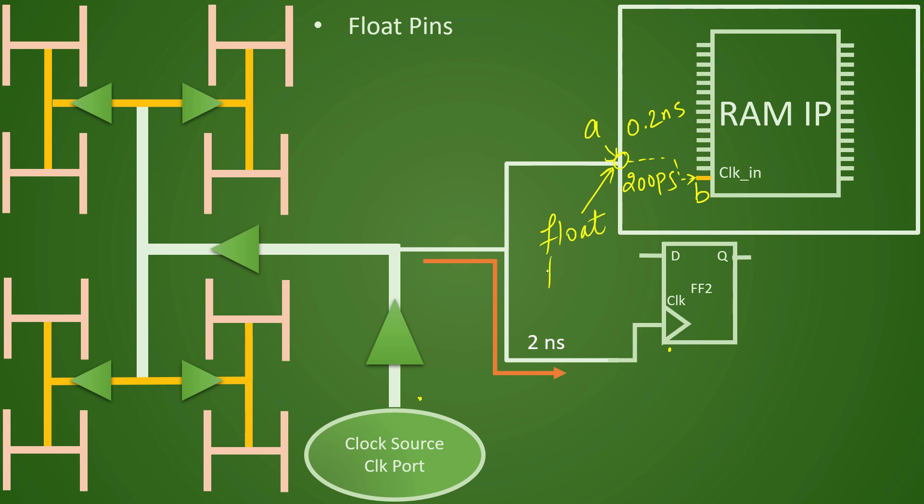And this float pin will be taken such that when the balancing is there, for this point A, we should be taking not entire 2 nanoseconds because in that case, we will be breaching 2 nanosecond target. Total when it reaches the clock pin of this RAM IP, it will be taking 2 plus 0.2 that will be 2.2 nanosecond to reach to B if we are taking normal case.